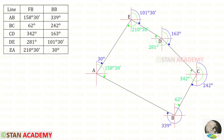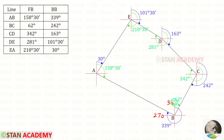Now we can check the back bearings to verify our drawing. For example, AE is 30 degrees — since 0 is here and 90 is here, 30 degrees falls between them, so the drawing is correct. Similarly, BA is 339 degrees, which falls between 270 and 360 — correct. In the same way we can verify all other angles, and all of them are correct.